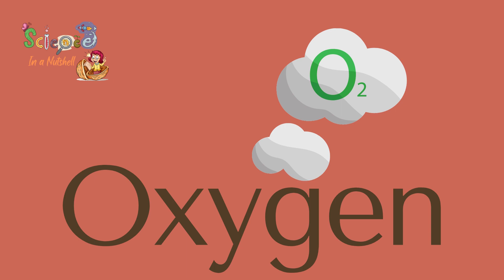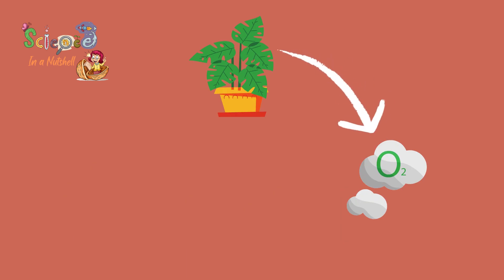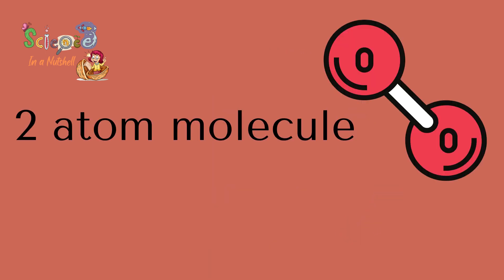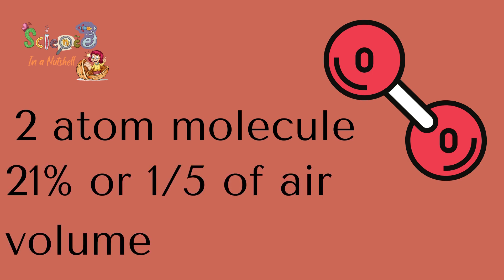Summary of Oxygen for Junior 6. Oxygen is produced by green plants and it is used in respiration of all living organisms and combustion. Combustion means burning. Oxygen has two-atom molecules; its symbol is O2. It has a fixed ratio in the atmosphere, which is 21%, or we can say 1 over 5 of the air volume.